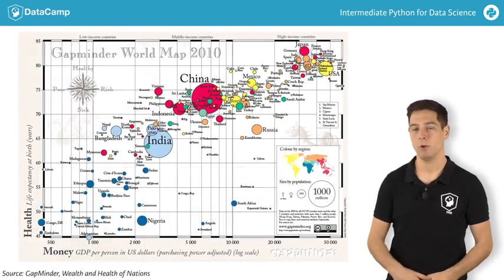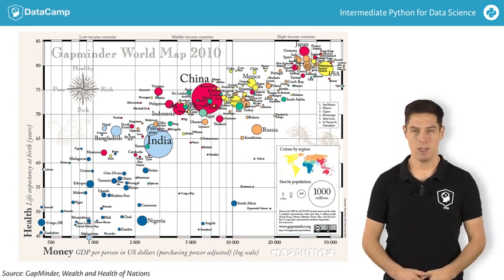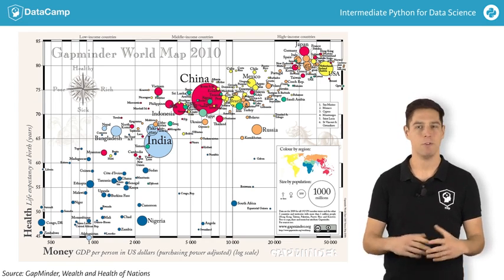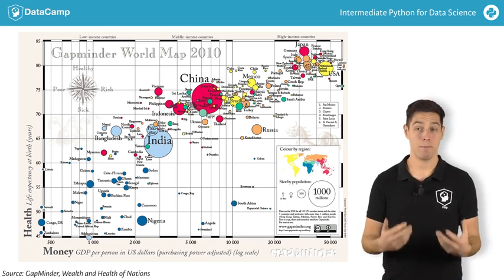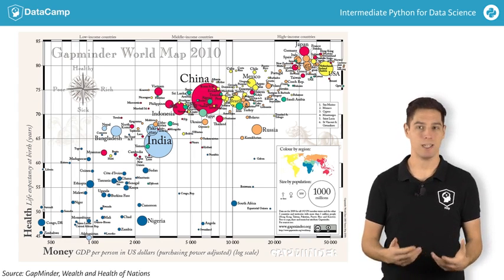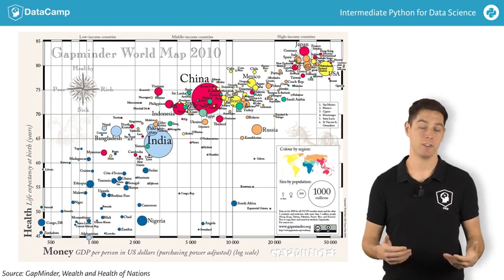As an example, have a look at this beautiful plot. It's made by the Swedish professor Hans Rosling. His talks about global development have been viewed millions of times. And what makes them so intriguing is that by making beautiful plots, he allows the data to tell their own story. Here we see a bubble chart, where each bubble represents a country.